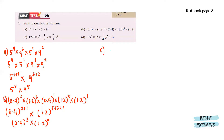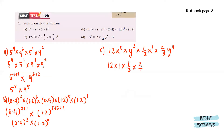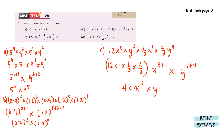Next for c, we have 12x to the power of 5 times y to the power of 3 times 1 over 2 times x times 2 over 3 times y to the power of 4. The x powers give us 5 plus 1, and the y powers give us 3 plus 4. So that will give us 4 times x to the power of 6 times y to the power of 7.